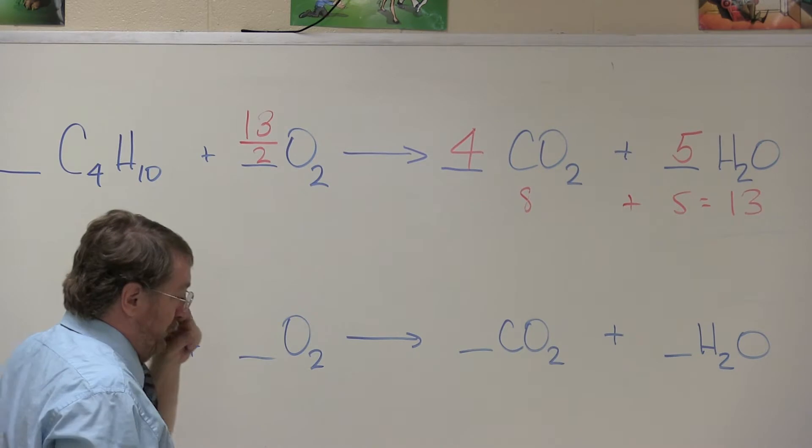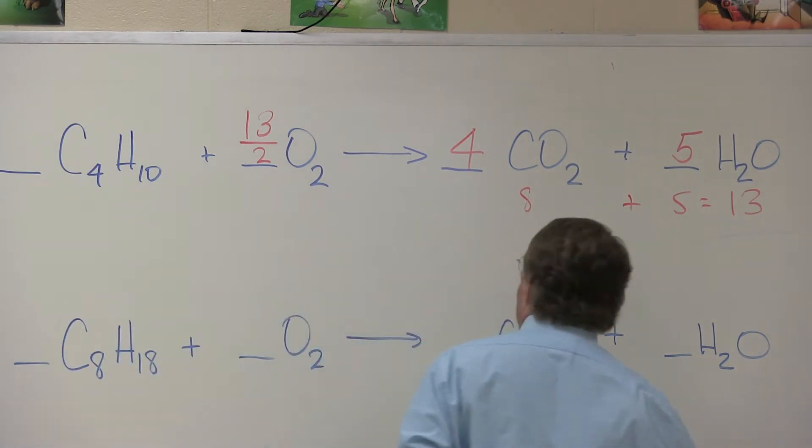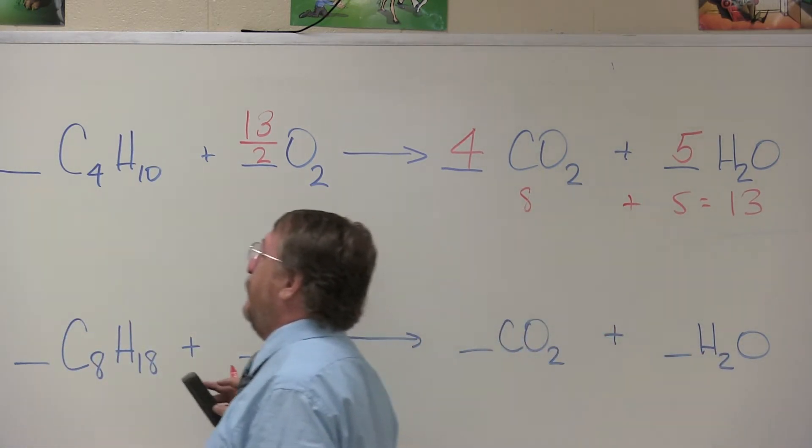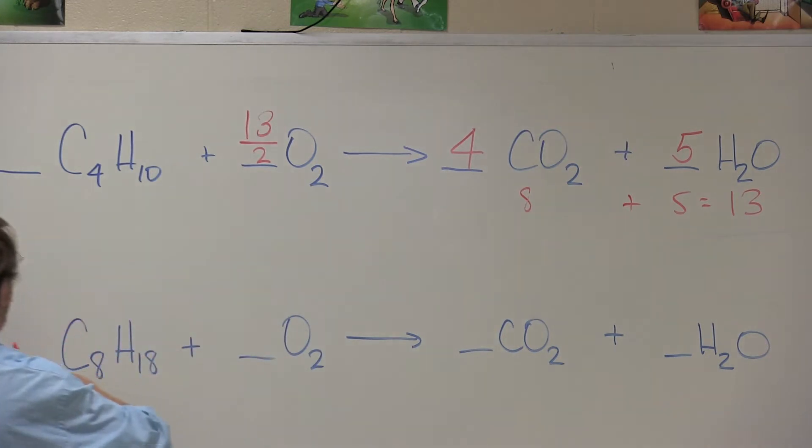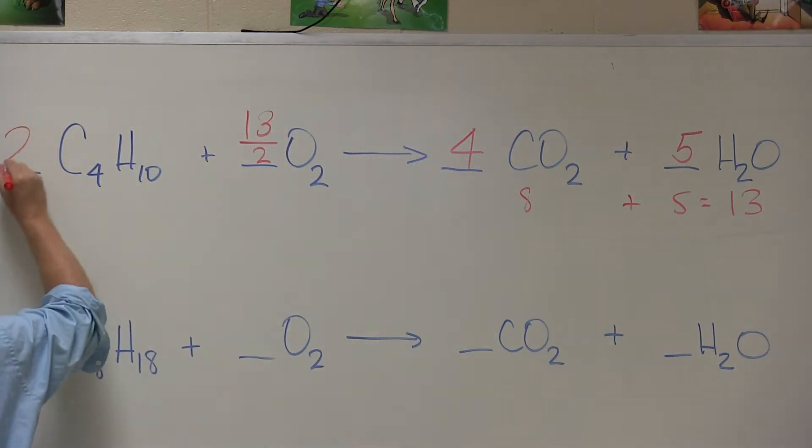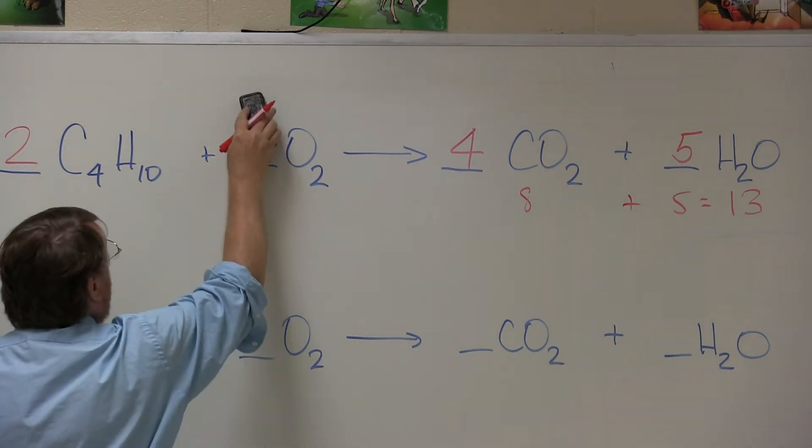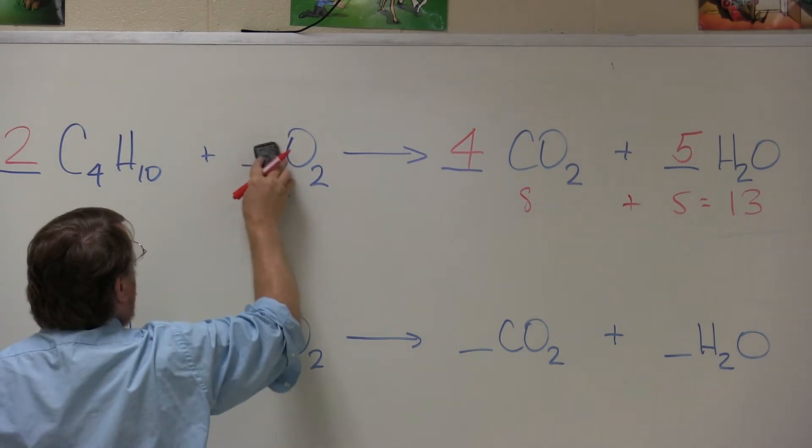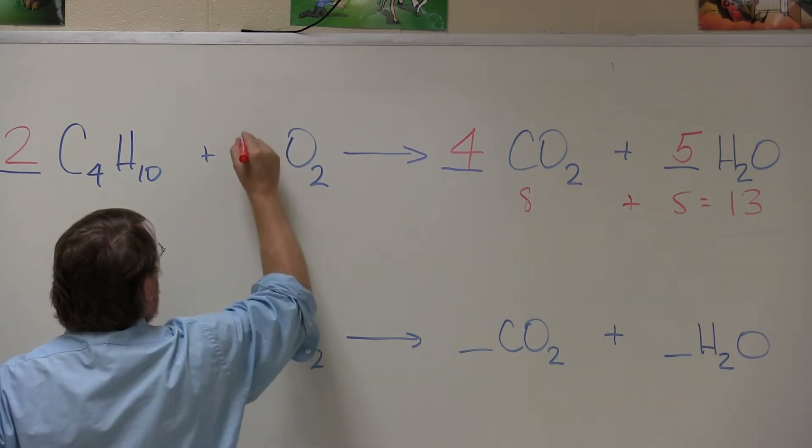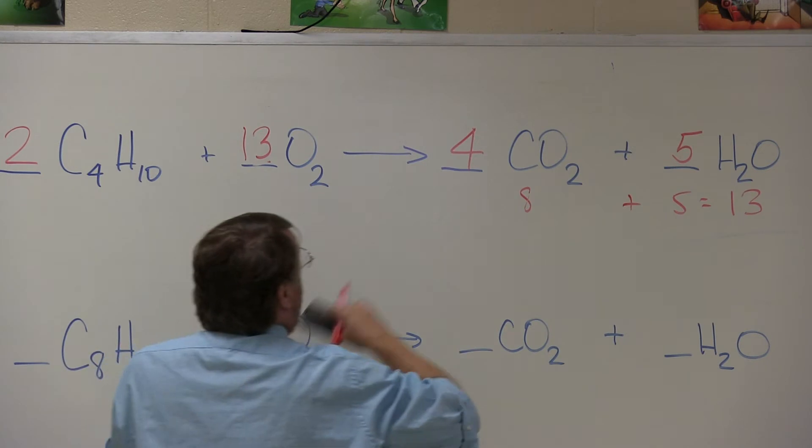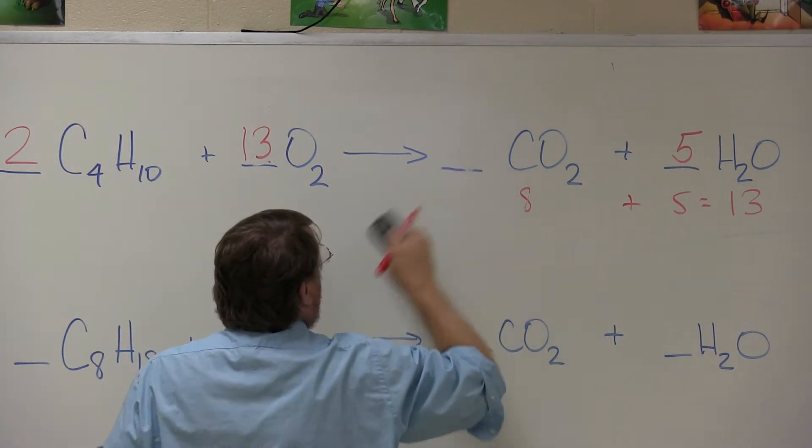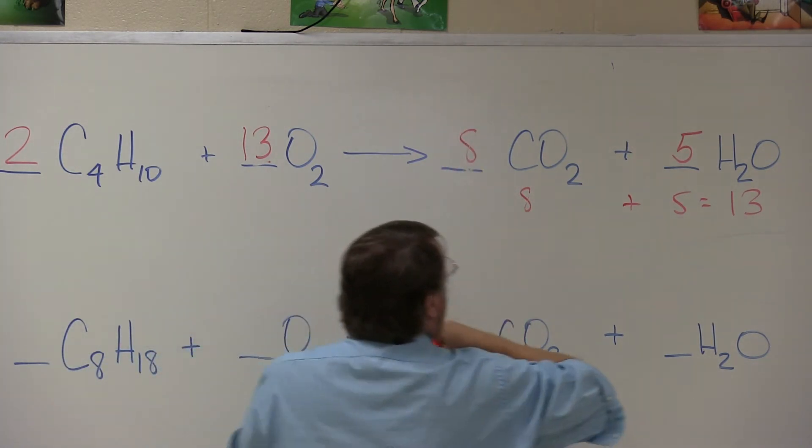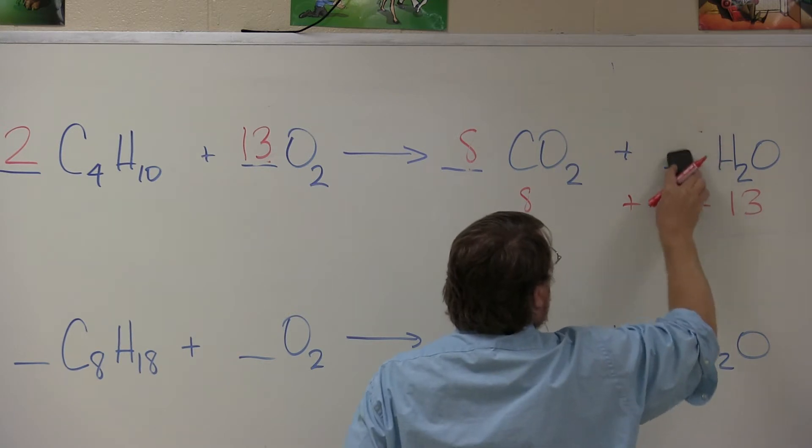Now I have a balanced reaction. You might say, well, I've got halves. You're right. We can eliminate the halves by doubling everything. Okay, so I'm going to go through and say, okay, two, double 13 halves, we'll get 13. 13, double 4, we'll have 8. Double 5, we'll have 10.